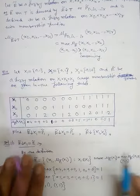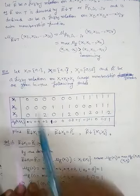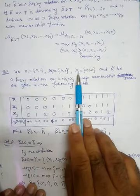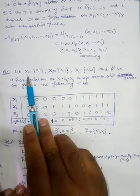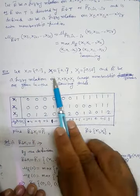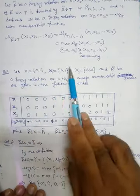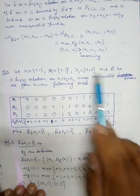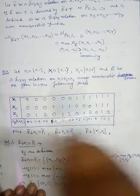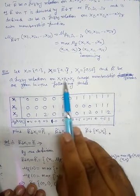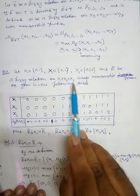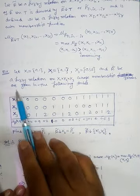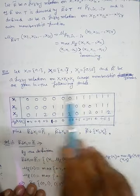Now let's see an application. Suppose we have three sets X1 = {0,1}, X2 = {0,1}, X3 = {0,1,2}, and R is a fuzzy relation on X1 cross X2 cross X3, whose membership grades are given in the following table.